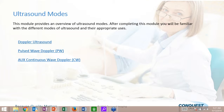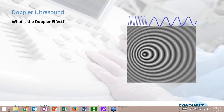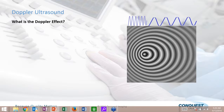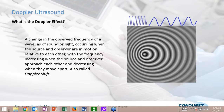Now we're going to talk about different ultrasound modes. Contemporary ultrasound systems have a variety of different modes for different diagnostic purposes. The first is Doppler, which is utilized in various ways. A great analogy is a police officer with a radar gun — they send out a beam, bounce it off a car, and by the amount of time it took for the beam to go out and back and the change in frequency, they can tell how fast you're going and in which direction.